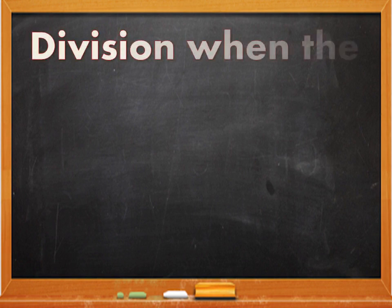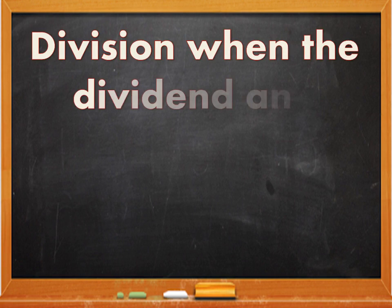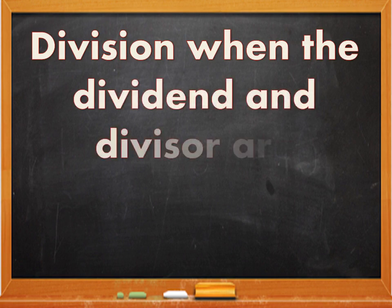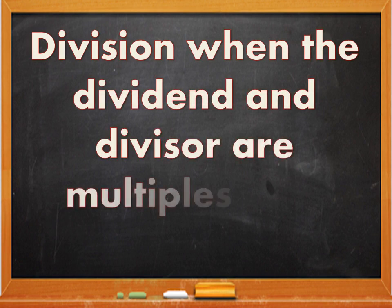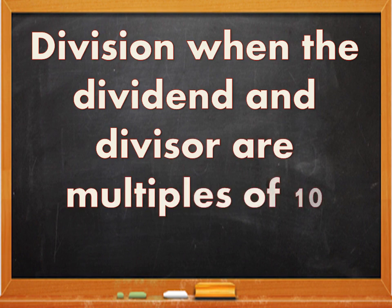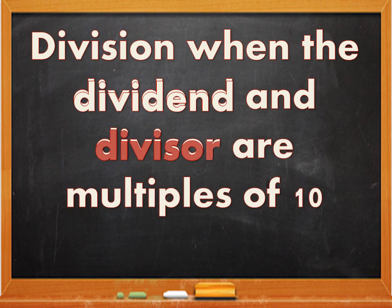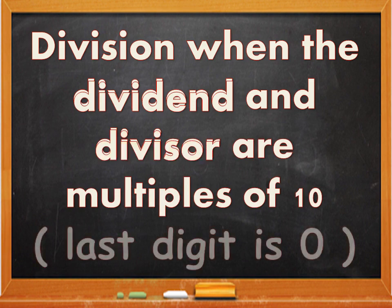In this video I am going to explain division when the dividend and the divisor are multiples of 10, which means the last digit in the dividend and the divisor both will be 0.